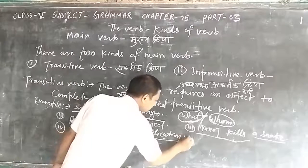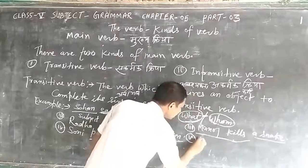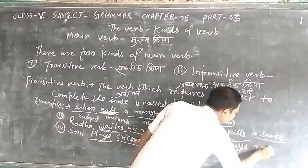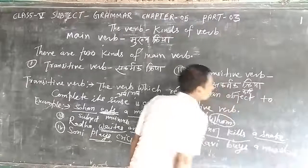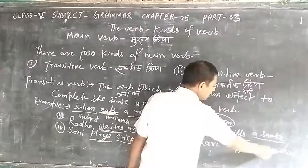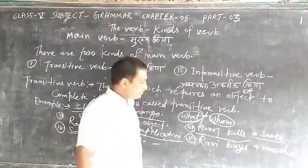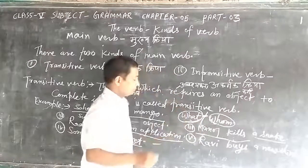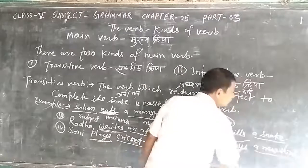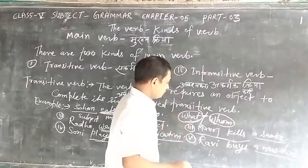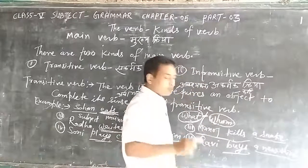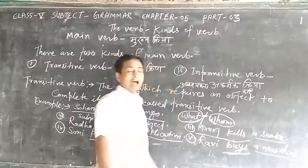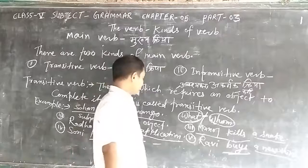Fifth example: 'Ravi buys a new shirt.' If anybody asks 'Ravi buys what?', the answer will be 'a new shirt,' which is the object. The verb 'buy' requires an object to complete its sense. So, 'buy' is a transitive verb.